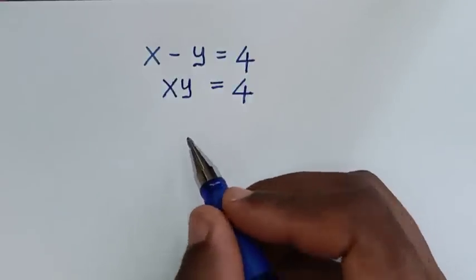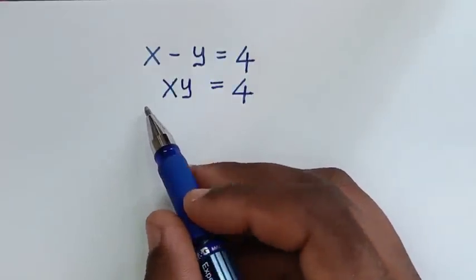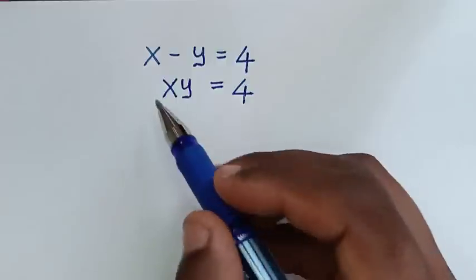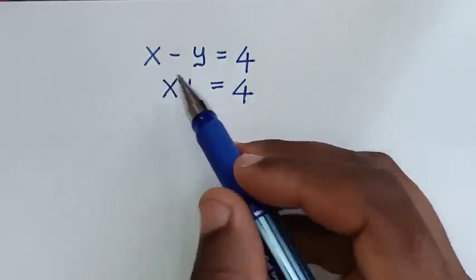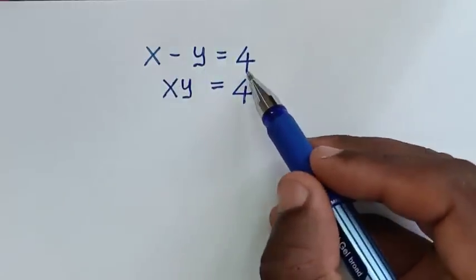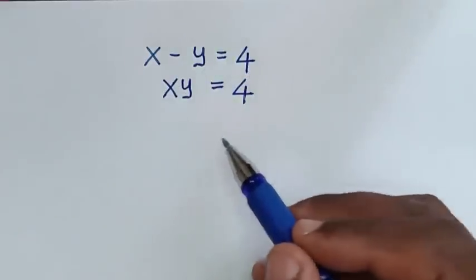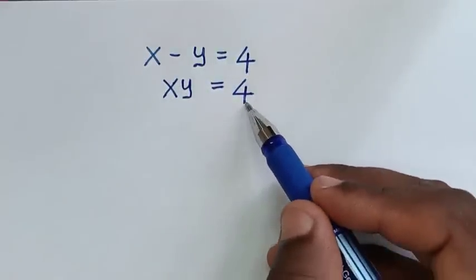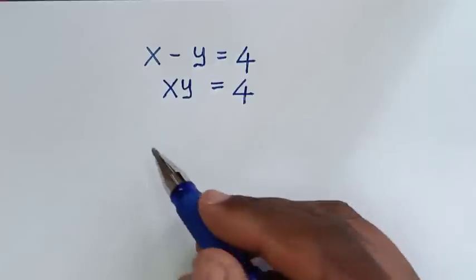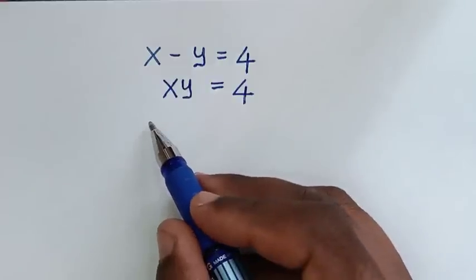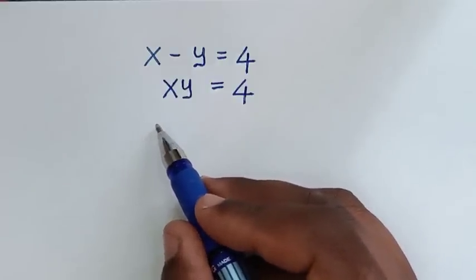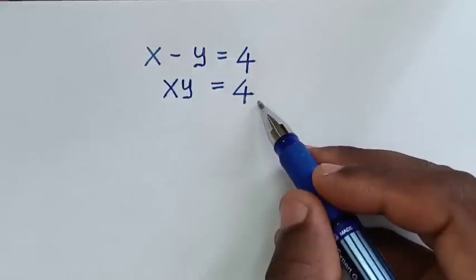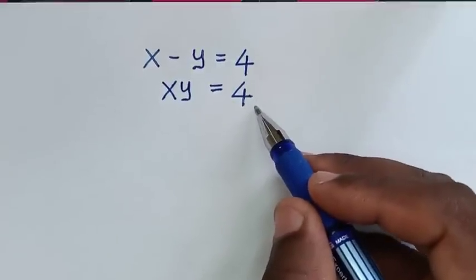Hello, you are welcome to solve this math problem which is x minus y is equal to 4, and x times y is equal to 4, to find the values of x and y from these two systems of equations.